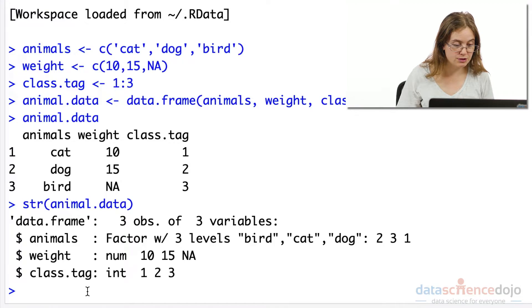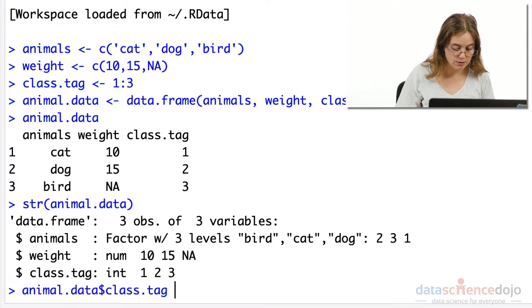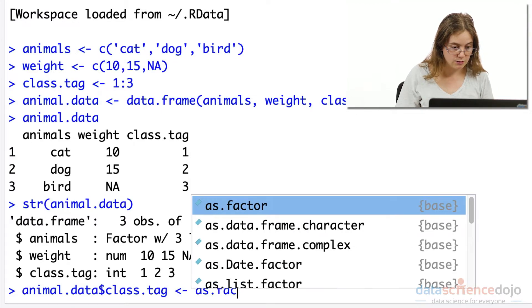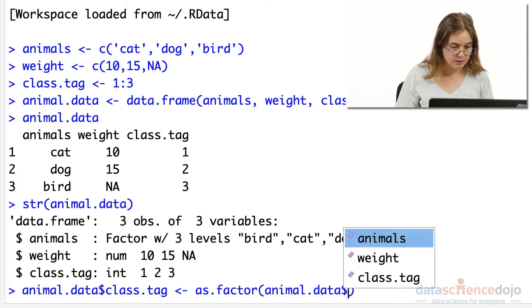To do this, we refer to our data set and we're looking at the class tag variable. I'm going to override this by turning all those values into factors. So once again, in our animal data set, looking at our class tag variable.